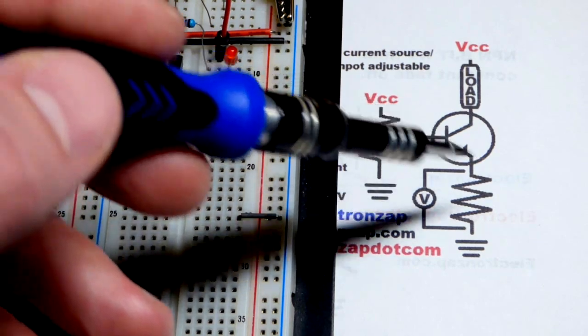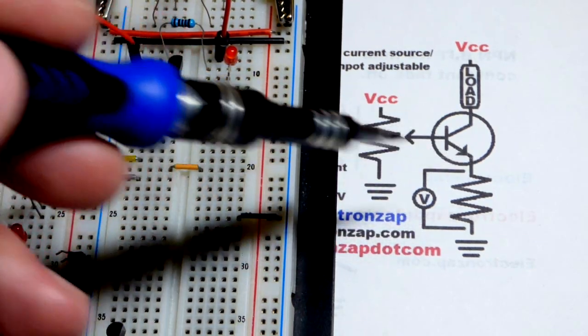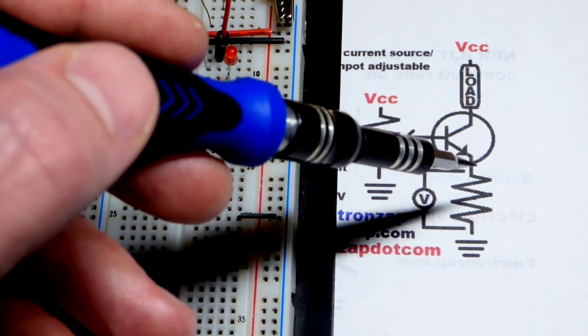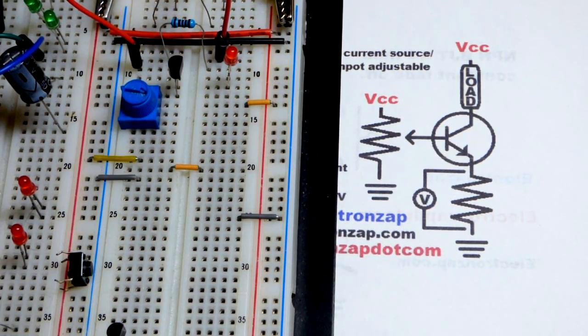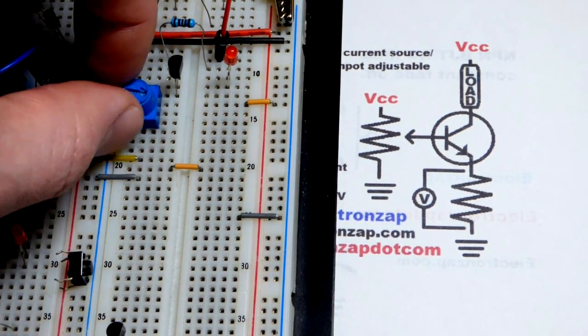In any case, we lose 0.6 volts from base to emitter. So whatever voltage we set here, it'll be 0.6 volts less across the resistor. But this is a pretty easy circuit to experiment with.